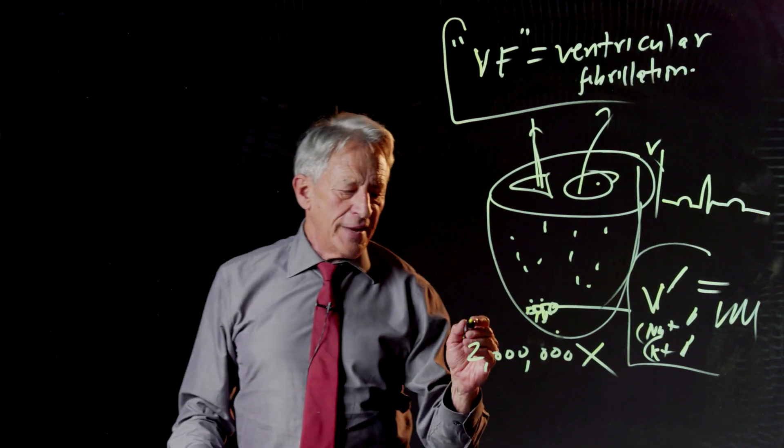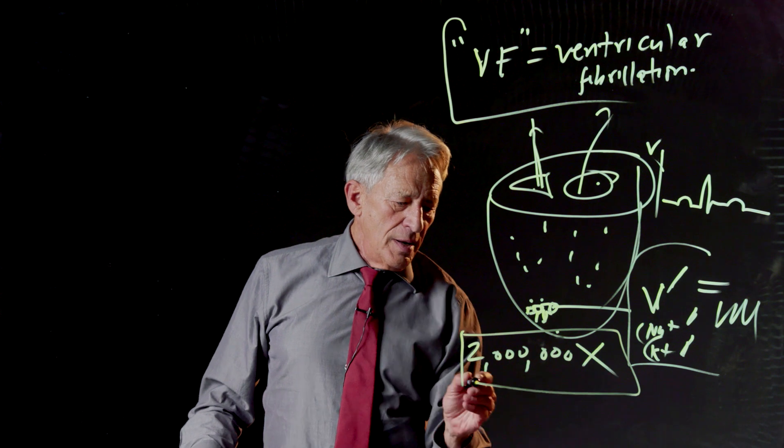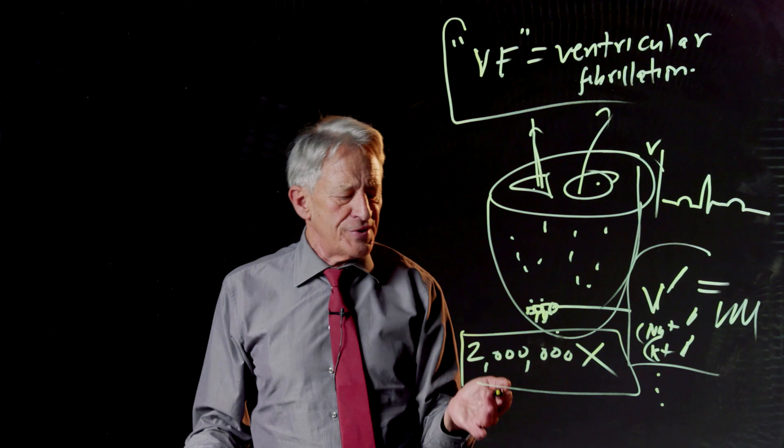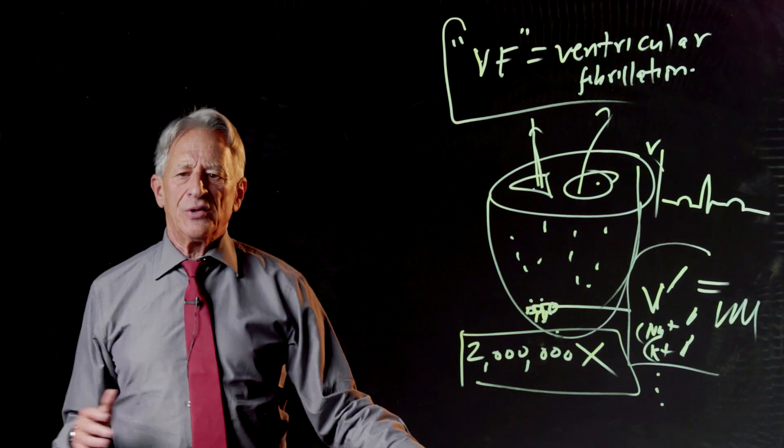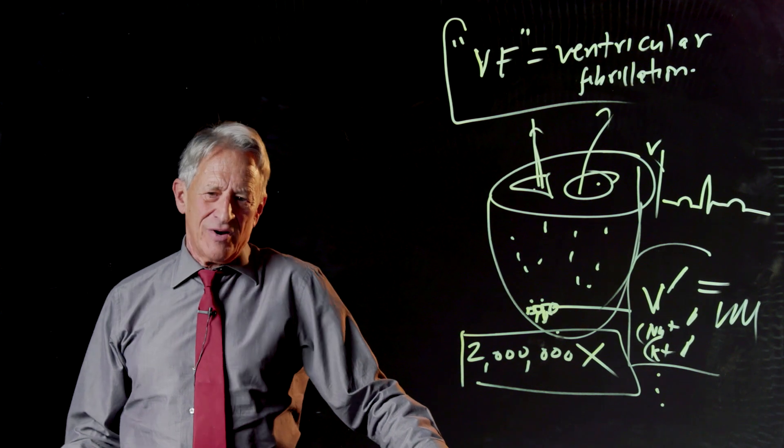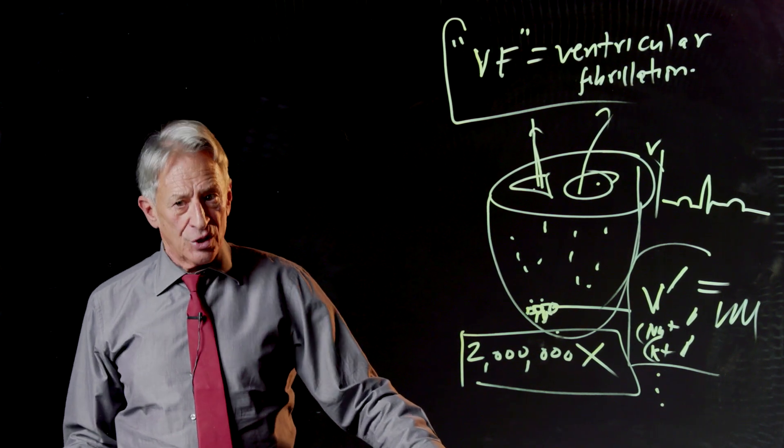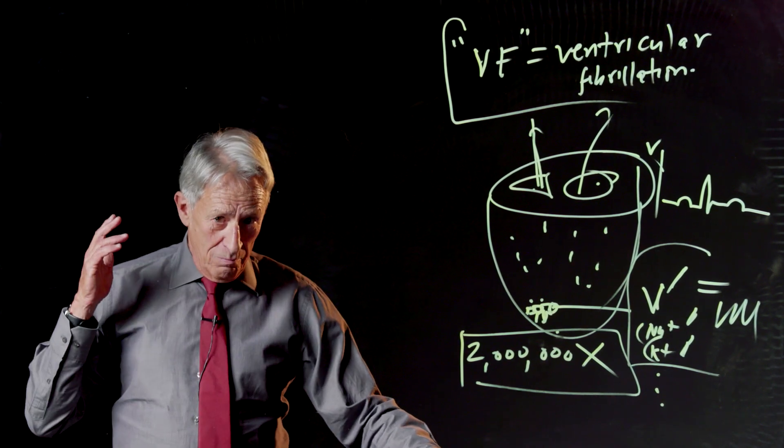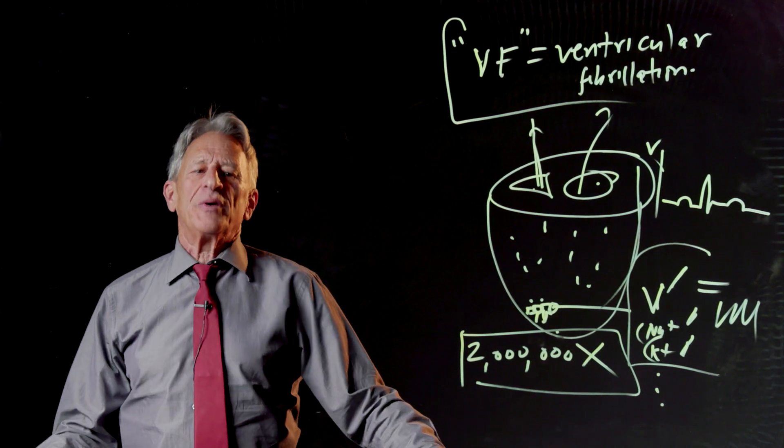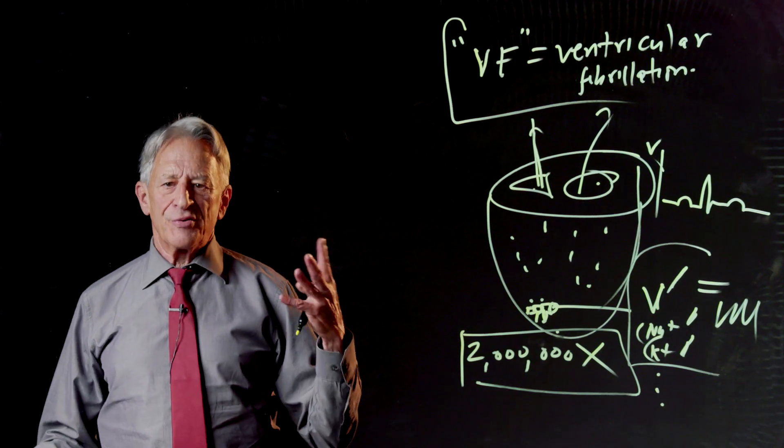So we make this model. Well, it has roughly 25 variables per cell times 2 million cells. That's a 50 million variable differential equation. But with modern computation, that's not a problem. And we can do it. And here's the result.